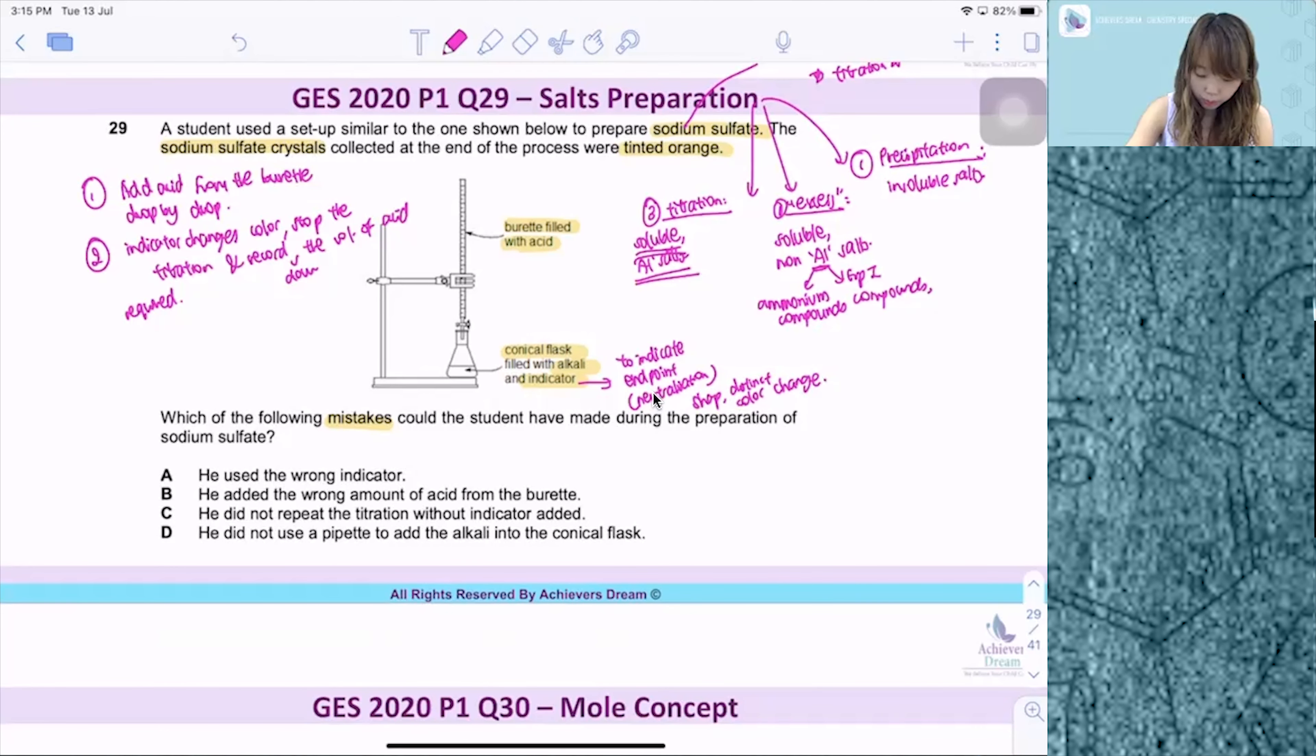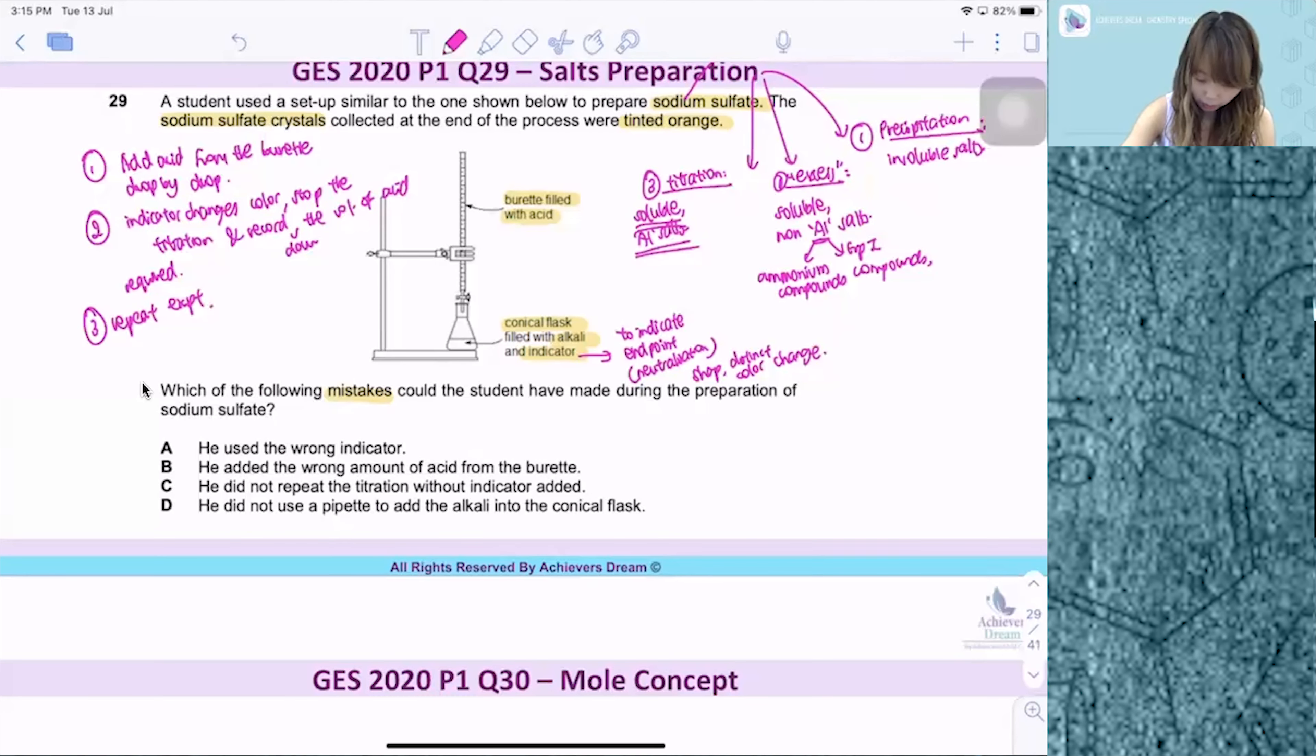Then we are going to repeat the experiment. But this time without adding in the indicator, and we are using the same volume of acid that we have recorded down previously. So what is the purpose of not adding in indicator? It is to prevent contamination of sodium sulfate.